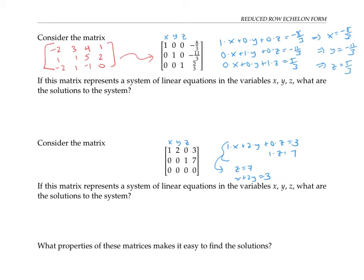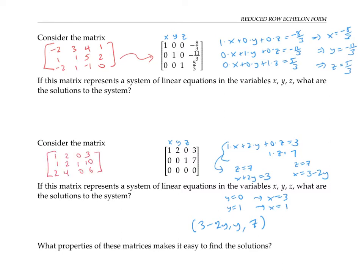There's no unique solution here. As long as z equals seven and x equals three minus two y, we can make y be anything we want. For example, if y equals zero, then x would be three; if y equals one, then x would be one. So we have infinitely many solutions, all of the form (three minus two y, y, seven) where y can be anything. It's still pretty easy to read off that information just from the matrix, much easier than this other equivalent matrix that has the same solution set.